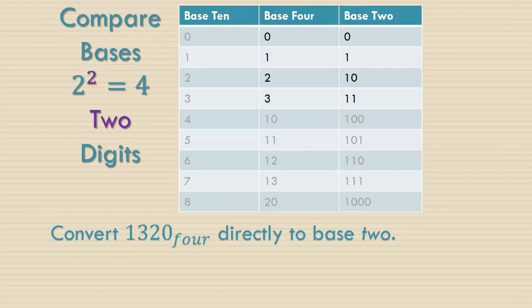Because 2 squared is equal to 4 we know we can do a shortcut where two base 2 digits corresponds to one base 4 digit. Specifically we're going to convert 1320 from base 4 into its corresponding base 2 version. If you'd like to try this on your own you can pause the video and then push play when you're ready to check your answer.